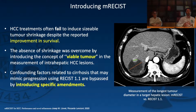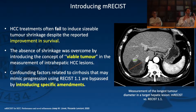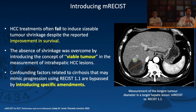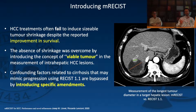We now introduce mRECIST, the modified RECIST for hepatocellular carcinoma. mRECIST was developed because in liver tumors, the tumor may not shrink after treatment — you might think the treatment is not working, but in fact it may be causing necrosis while the volume increases. So we introduce the concept of the viable tumor — the portion of tumor that enhances in the arterial phase. Using mRECIST, we measure only the viable part, which is smaller than the total lesion measured by RECIST 1.1.